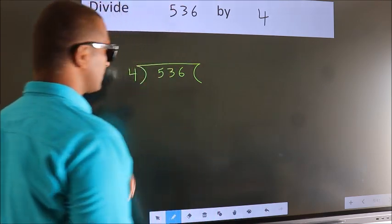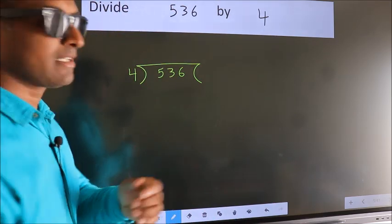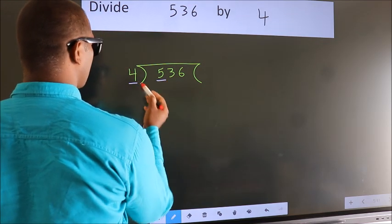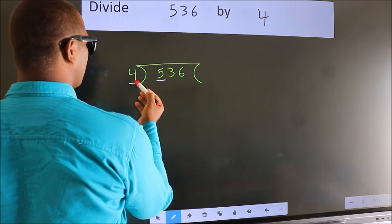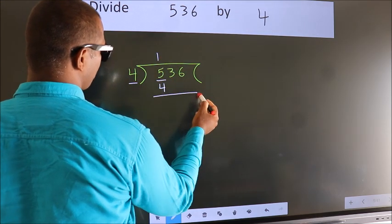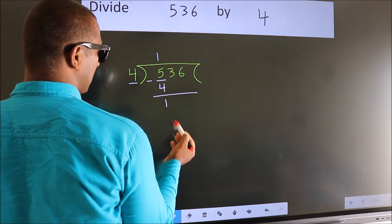This is your step 1. Next, here we have 5, here 4. A number close to 5 in 4 table is 4 once 4. Now, we should subtract. We get 1.